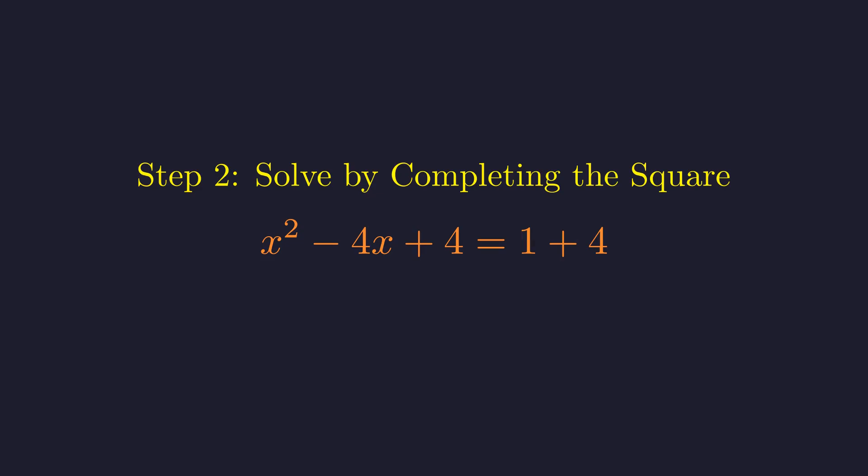On the right side, 1 plus 4 is 5, which gives us 5. And now the magic of completing the square reveals itself. The left side is a perfect square, x minus 2 all squared.